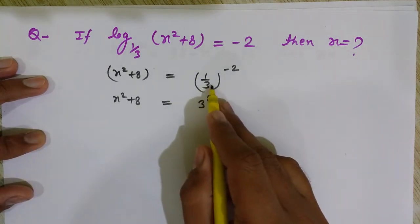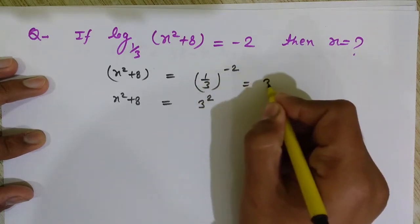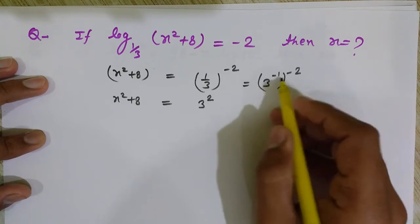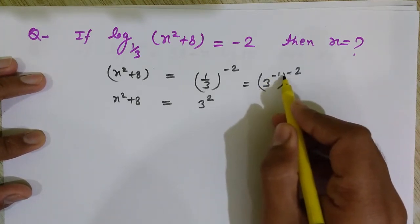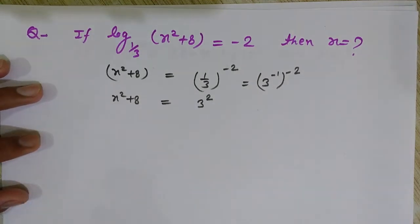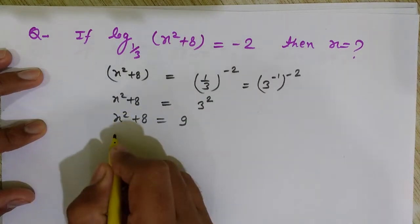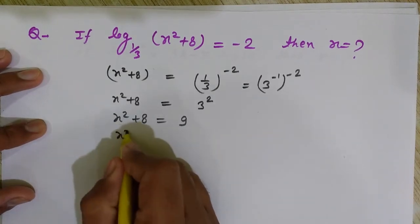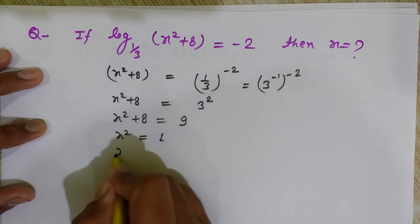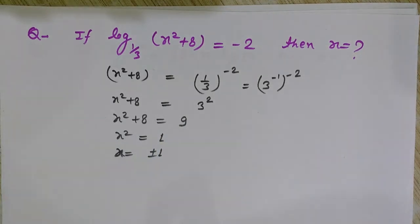Now I can simply find the value of x. x squared plus 8 equals (1/3) to the power minus 2, which means 3 squared — because (1/3) can be written as 3 to the power minus 1, and the whole power minus 2 gives minus 1 times minus 2 equals 2, so 3 squared equals 9. Therefore x squared plus 8 equals 9, so x squared equals 1, giving x equals plus or minus 1.